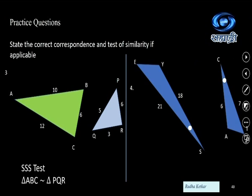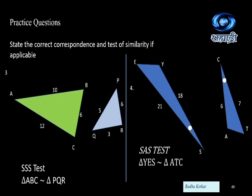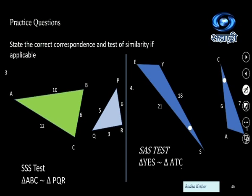The fourth example has a slightly modified figure. The sides remain the same as the earlier example, but now the angles at S and at C are included angles. Since the corresponding sides are in proportion and the included angles are congruent, we can apply the SAS test. Observe that angle at Y and angle at A are obtuse angles — they should be corresponding. Angle at S and angle at C are the congruent included angles. So S corresponds to C, and E corresponds to T. Always check the correct correspondence, as triangles similar in one correspondence may not be similar in another.